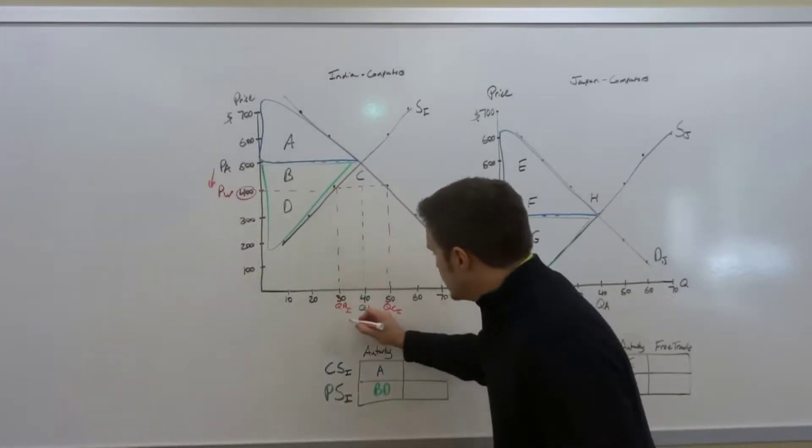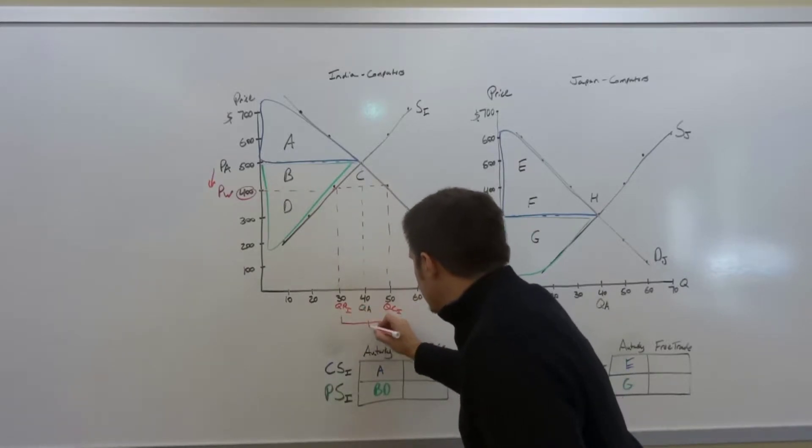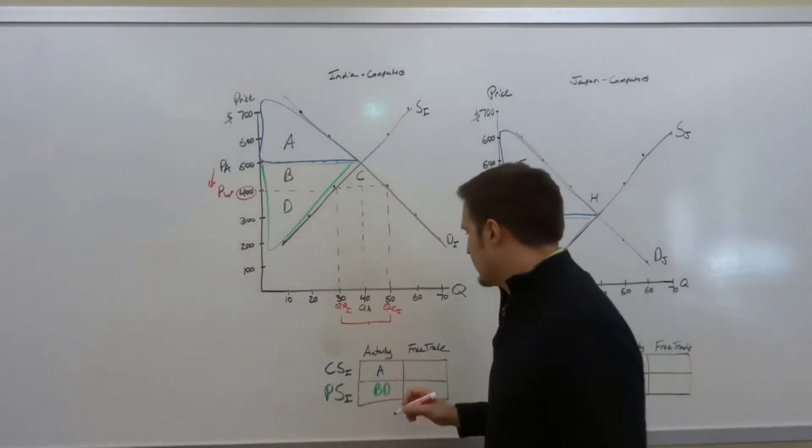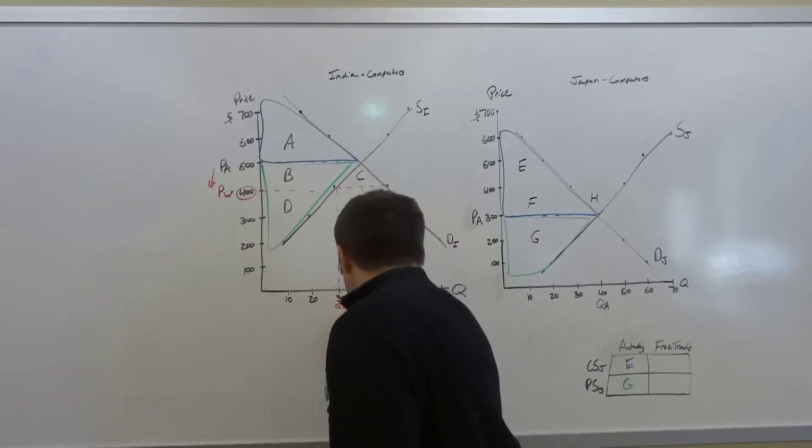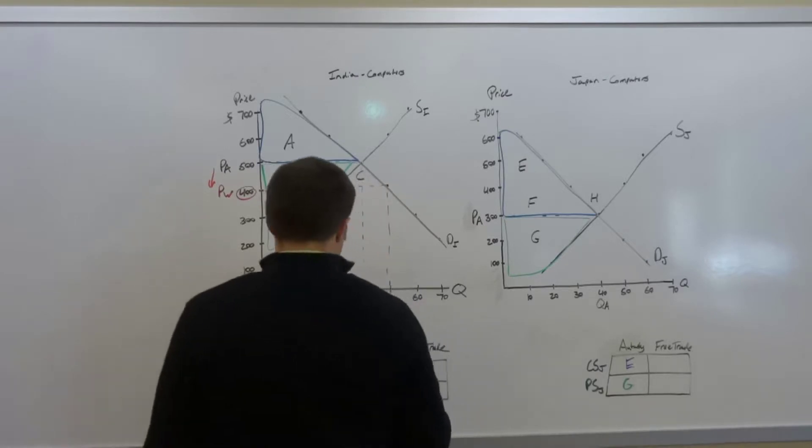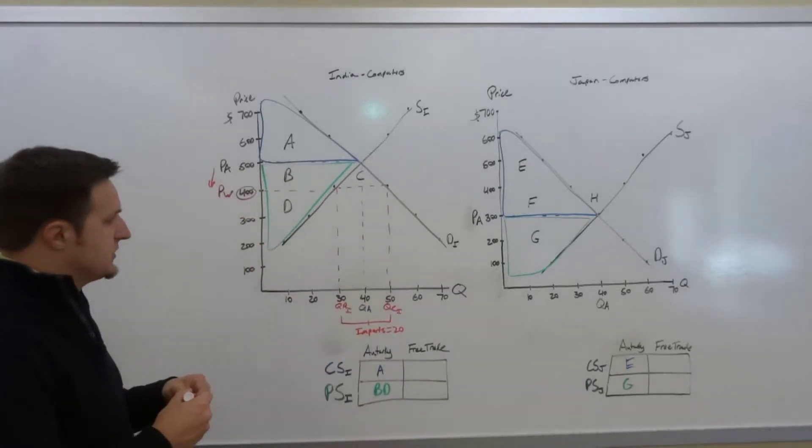Now the gap between the quantity consumed and the quantity produced is going to be what we call imports. That is goods that are coming into the country and it's going to be 20 computers. So they're going to bring 20 computers into the country.